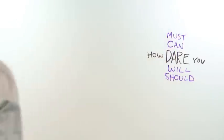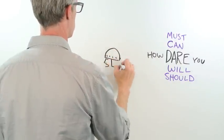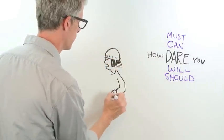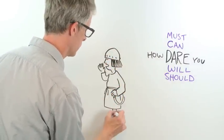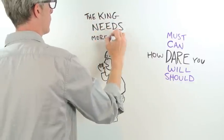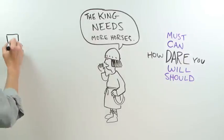Dare isn't the only one that can be main or modal. Another English verb with one foot in the regular and one foot in the modal category is 'need.' Unlike dare, though, need started as a regular verb, but drifted over to the modal group starting in the 16th century.